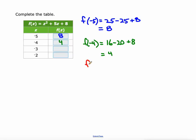And f at negative 3. That's negative 3 squared which is 9, plus 5 times negative 3 which is negative 15, plus the 8. 9 and 8 makes 17, minus the 15 makes 2.